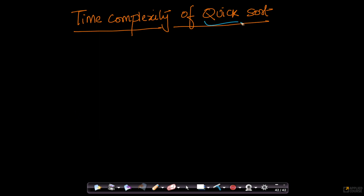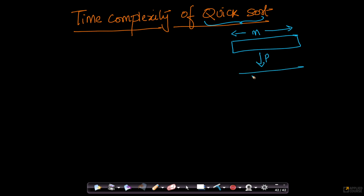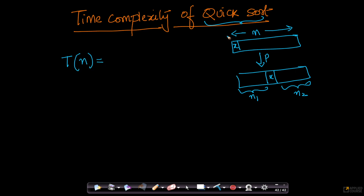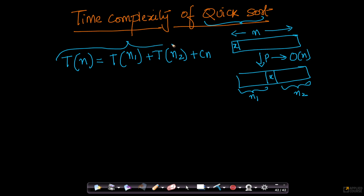Now let us understand the time complexity of quicksort. What is happening in quicksort? You have a problem of size n. Using the partition function, you are breaking this problem — you take the pivot element and place it, breaking the problem into sizes n1 and n2, such that n1 plus 1 plus n2 equals n. The recurrence relation is: the time to solve a problem of size n equals T(n1) plus T(n2) plus cn, where cn is the cost of partition.